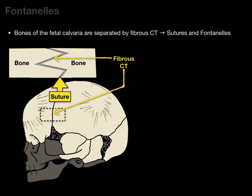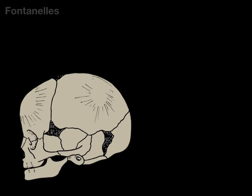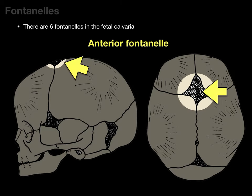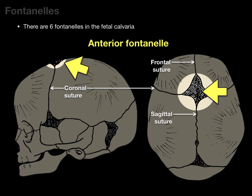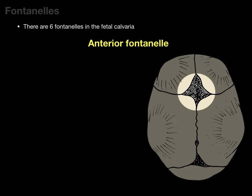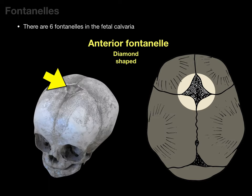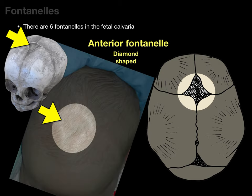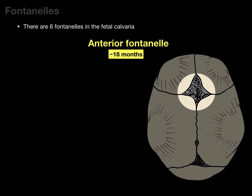Sutures go all the way through into adolescence before they fuse and become ossified. The other spaces are these large areas of connective tissue called fontanelles, and there are six fontanelles in the fetal calvaria. The first is the anterior fontanelle, bounded by the coronal suture, the frontal suture, and the sagittal sutures. The anterior fontanelle is diamond-shaped — it's the largest fontanelle — and it fuses about 18 months after delivery, making it the last of the fontanelles to fuse.